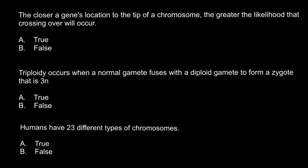Here is the first question: the closer the gene's location to the tip of the chromosome, the greater the likelihood that crossing over will occur. This is true. Imagine that here is a chromosome and here is the centromere. In the region around the centromere, the chromosome has repetitive DNA, and in this region crossing over almost doesn't occur.